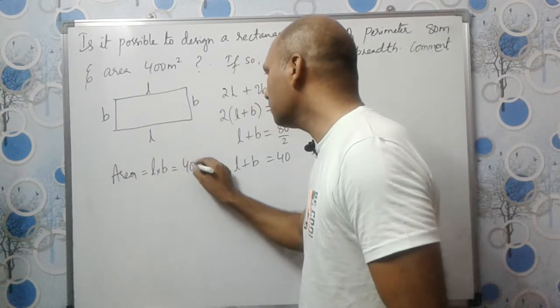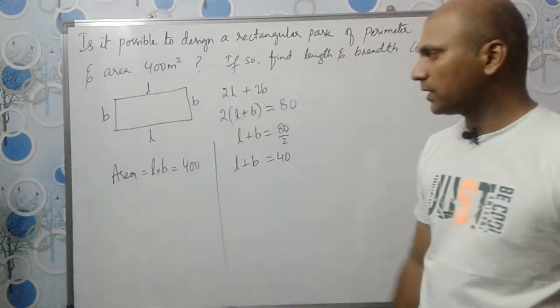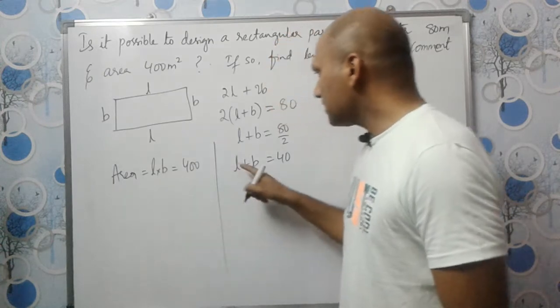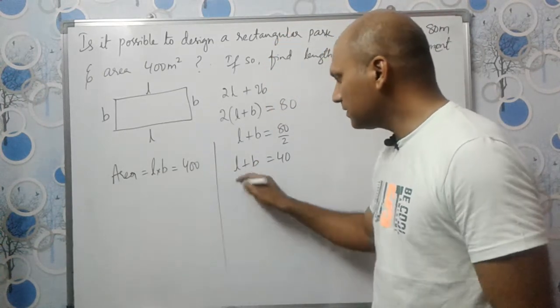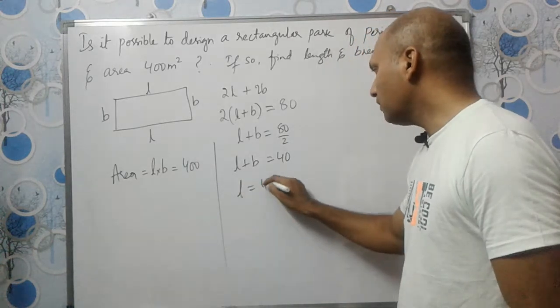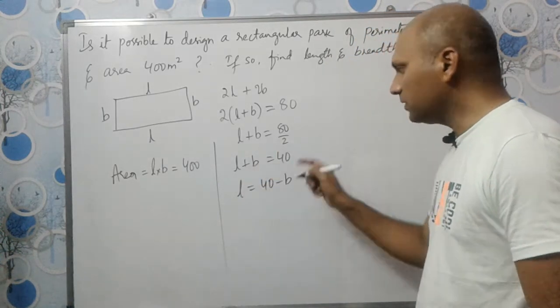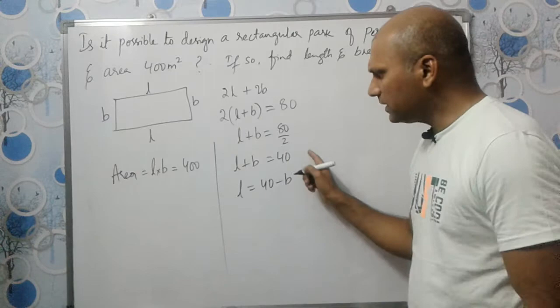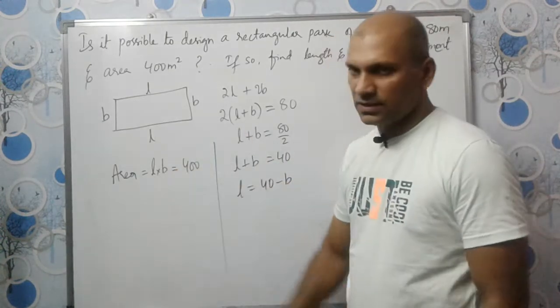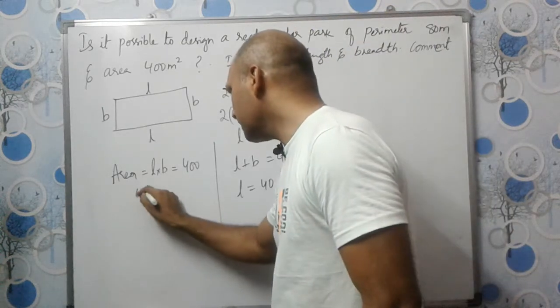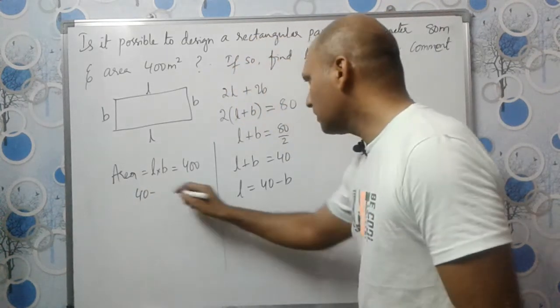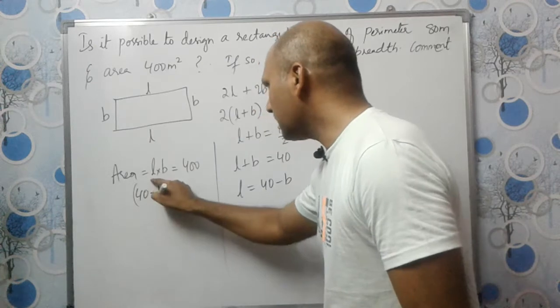Also given, area should be 400. The area of a rectangle is L×B, which should equal 400 meter square. Let us substitute the value of L. We can write L as 40-B and substitute this value.